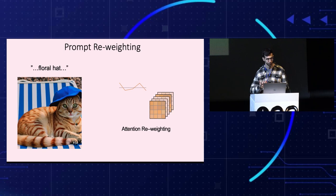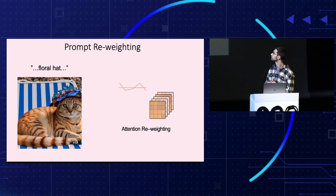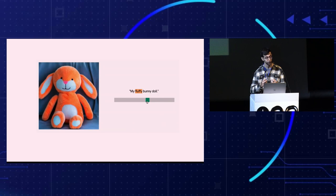Remarkably, we can even control the magnitude of the effect induced by a specific word by scaling its attention map. For instance, here we make the hat gradually more floral. I also like to think about it as intuitive fader control. Here we increase and decrease the fluffiness of the doll.